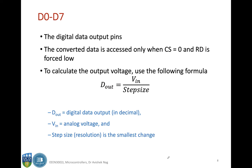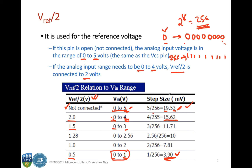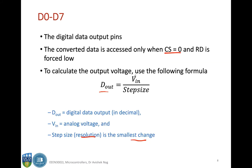D0 to D7 are the digital data output pins and the converted data is accessed only when CS pin is 0 and RD is forced low. To calculate the output, we use the formula: Dout equals Vin divided by step size, where step size is the smallest change or resolution. Dividing Vin by step size gives Dout — the digital data output in decimal — and then the binary equivalent is displayed on D0 to D7.